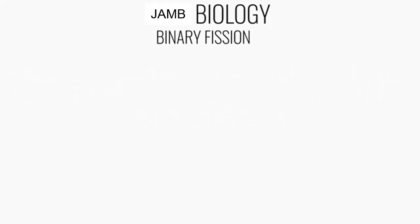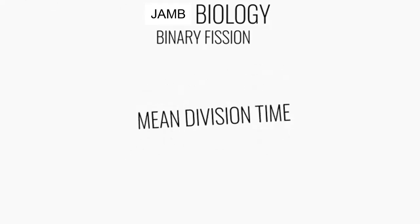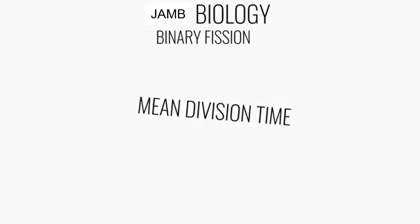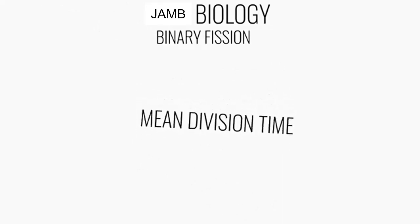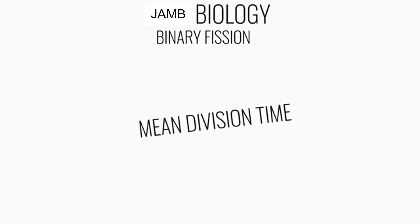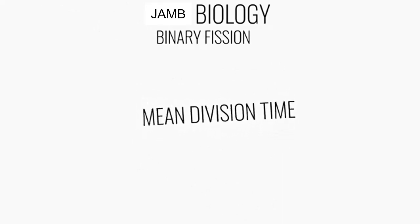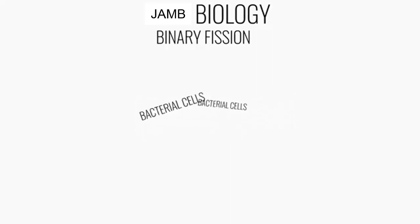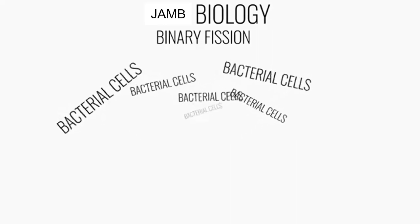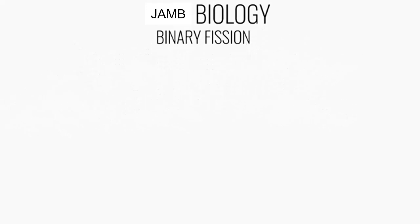The average amount of time it takes for one bacterial cell to divide into two is called the mean division time. If we know the mean division time of a particular cell, we can obtain the number of cells it is able to produce in a given period of time.